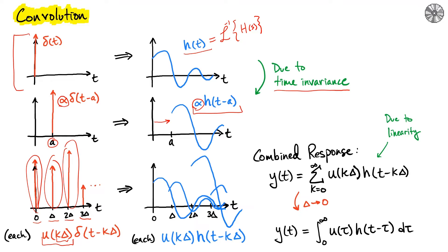The corresponding output for each of these pulses is given by the scaling—this term is exactly the same as u(k delta)—and then the response is just h shifted by the amount of that k delta again.